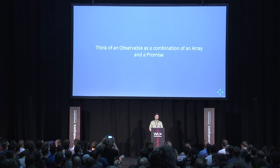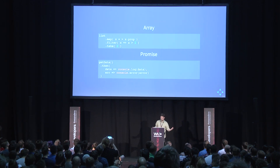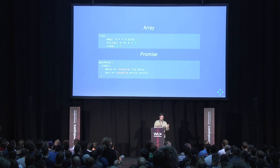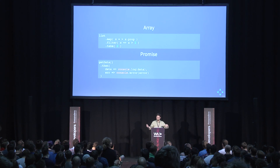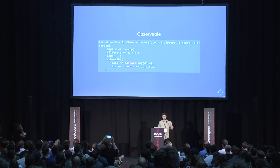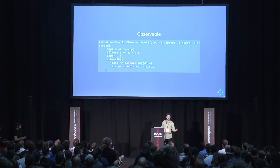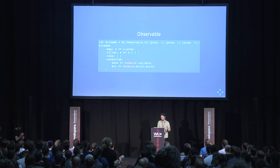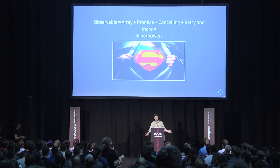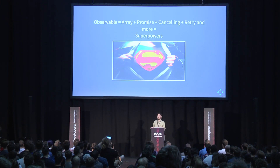Think of an observable as a combination of an array and a promise. From the array we have map, filter, and take. From the promise we have a then method with a data callback and an error callback. Combine them together and you get the observable — but instead of 'then' you have 'subscribe'. If you intermix arrays, promises, cancellation capacity, retries, and more functionality, you get superpowers — you get RxJS and the observable.